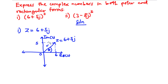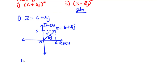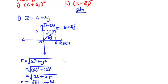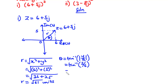Let's find r, the modulus, and theta, the argument. We have r equals the square root of x squared plus y squared. With x equal to 6 and y equal to 5: 6 squared is 36, plus 5 squared is 25, giving the square root of 61. Now for theta: theta equals tan inverse of the absolute value of y divided by x, which is tan inverse of 5 over 6, giving 39.81 degrees.